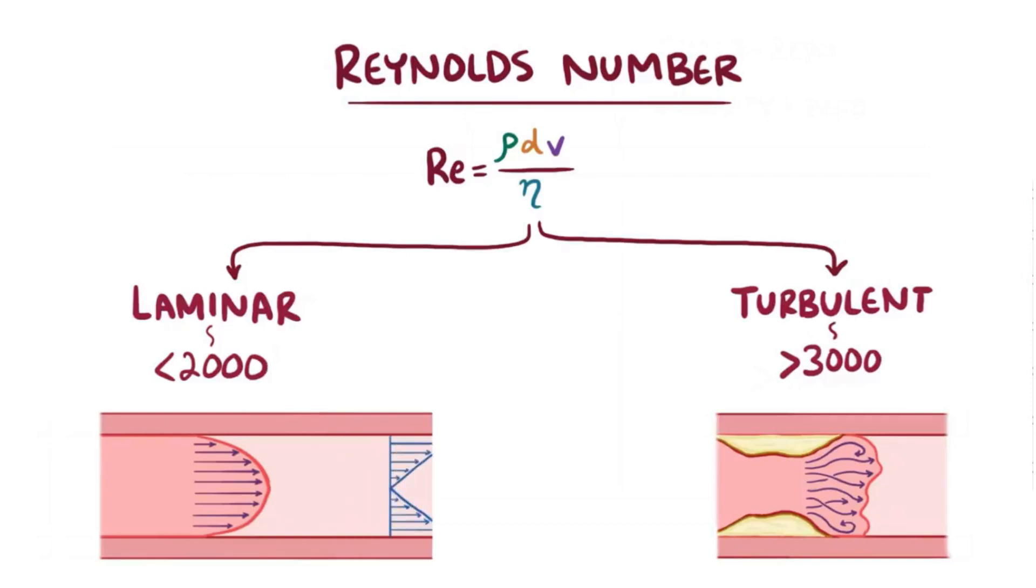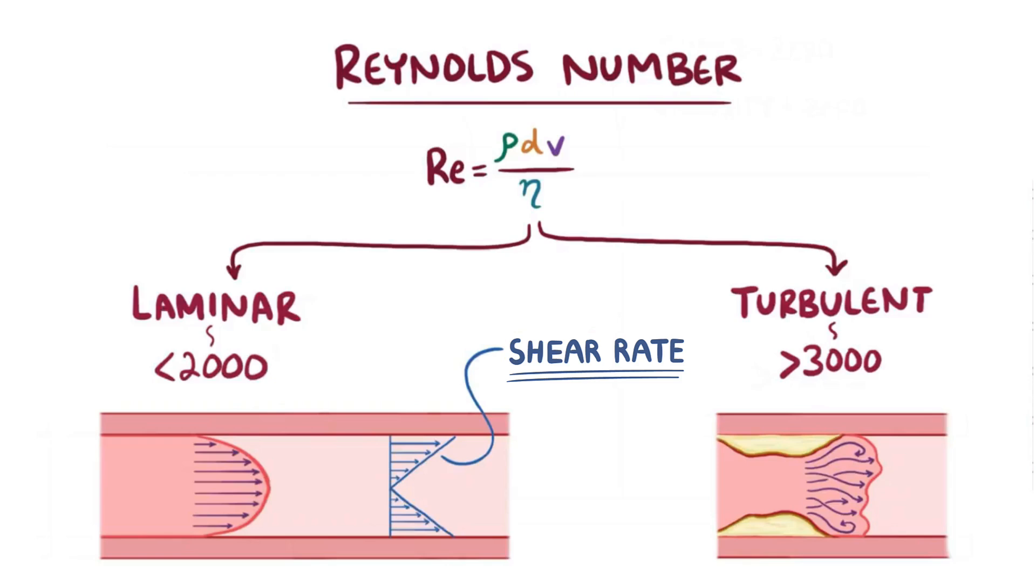Furthermore, differences in velocity across a blood vessel gives rise to the shear rate.